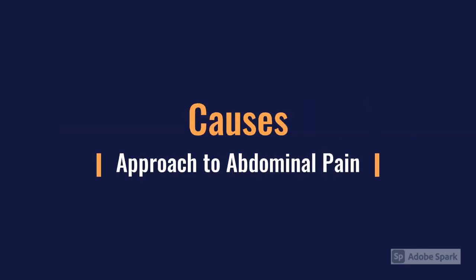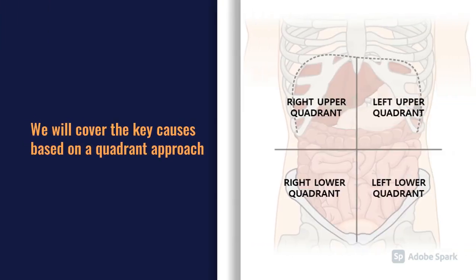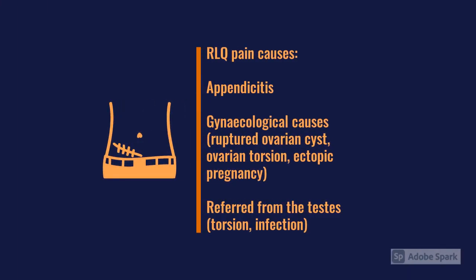Moving on to causes, there are a few ways to split them up. You can divide the abdomen into four quadrants or nine regions based on underlying anatomy. Starting at the right lower quadrant, the most common cause people think of is appendicitis, but we also have to remember gynecological emergencies such as ovarian torsion, ectopic pregnancies, and ruptured ovarian cysts, as well as referred pain from testicular torsion and other genitourinary conditions.